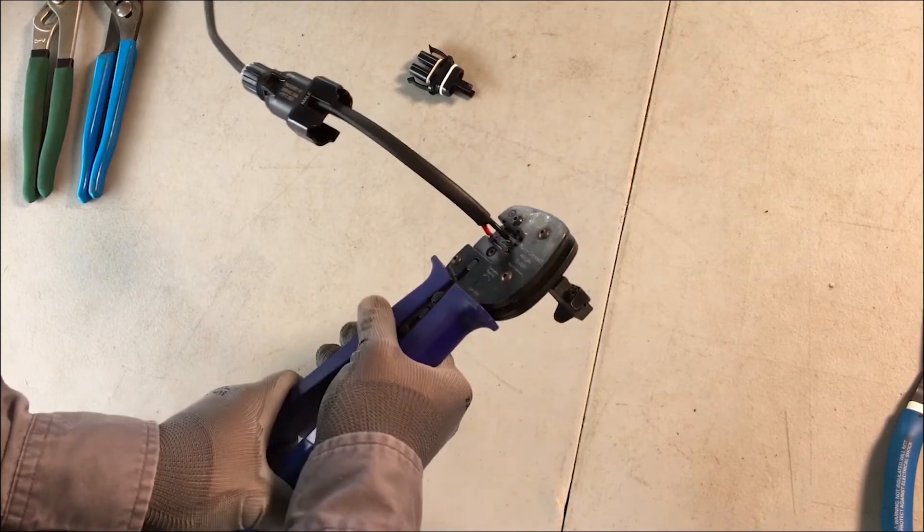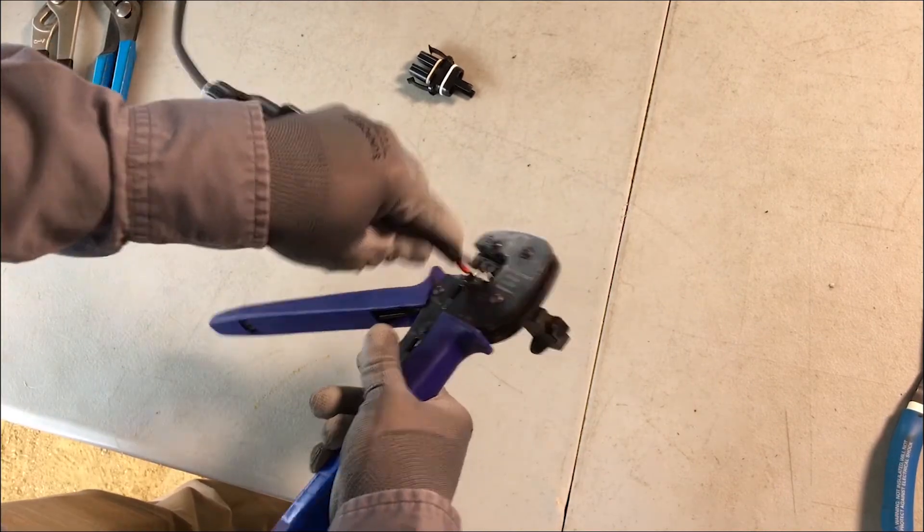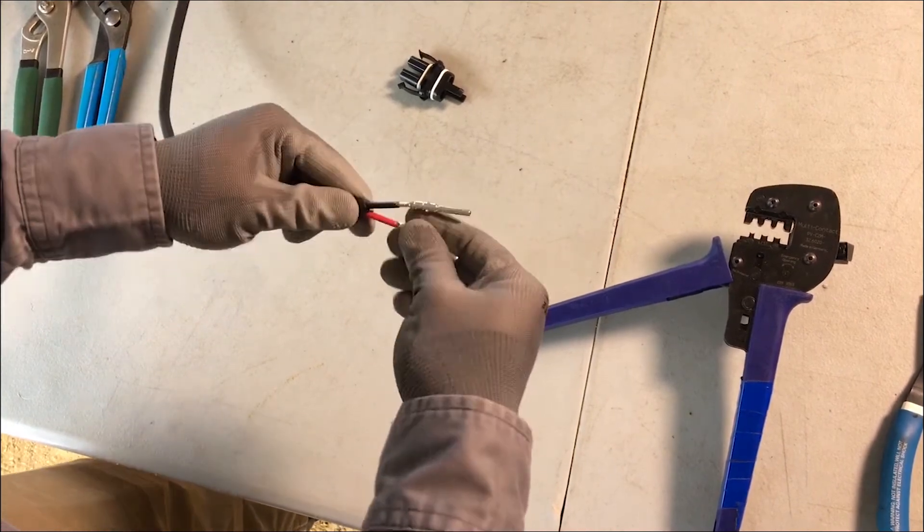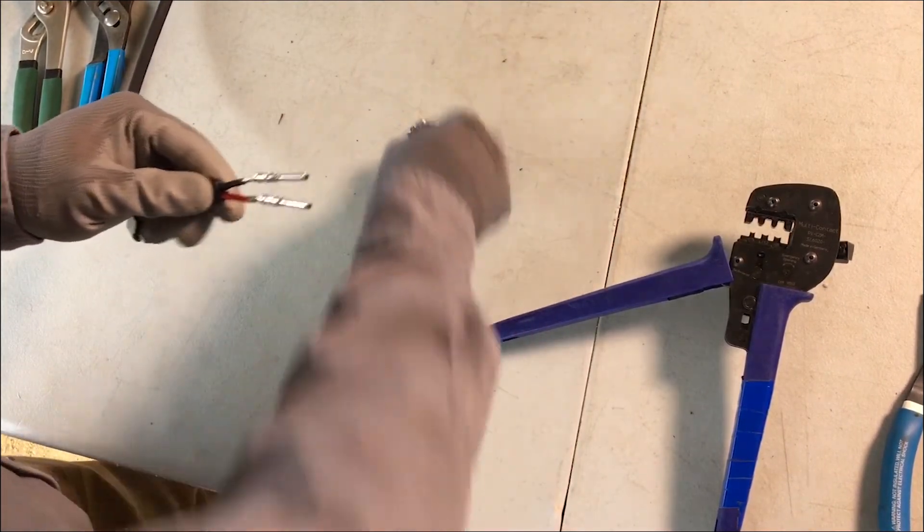Only use the terminals provided with the connector package. Release the crimp tool and tug the terminal to test the integrity of the crimp. Repeat these same steps for the black conductor.